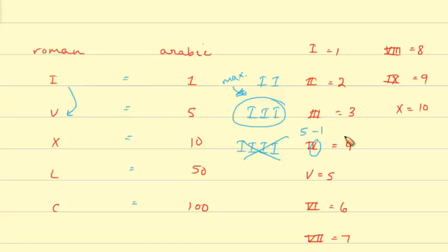And then you place a 1 before the 5, which basically translates to 5 minus 1, which is 4. And then V is 5.